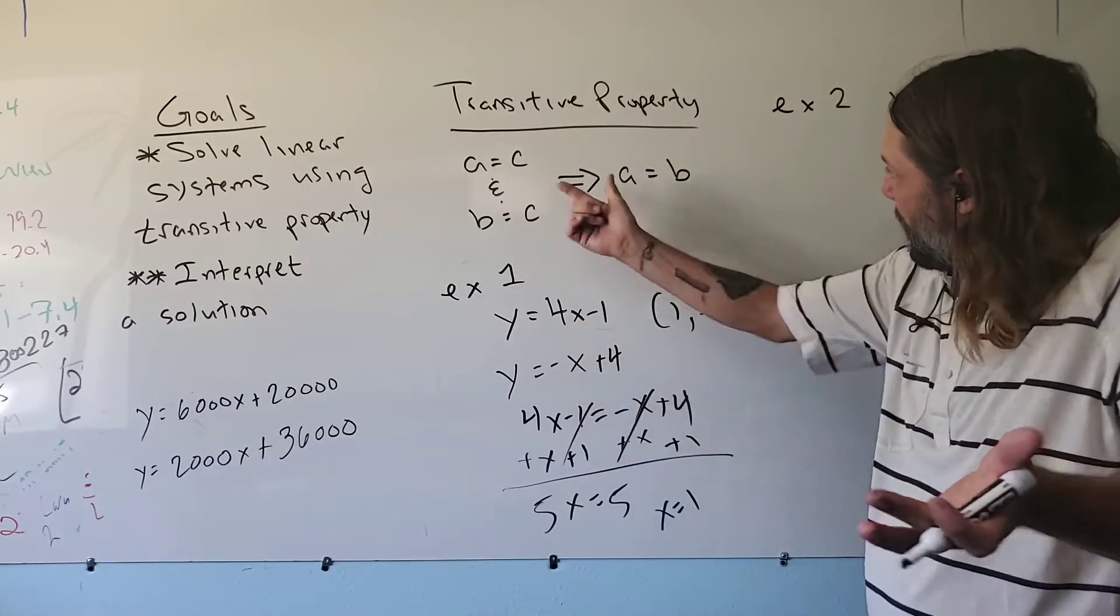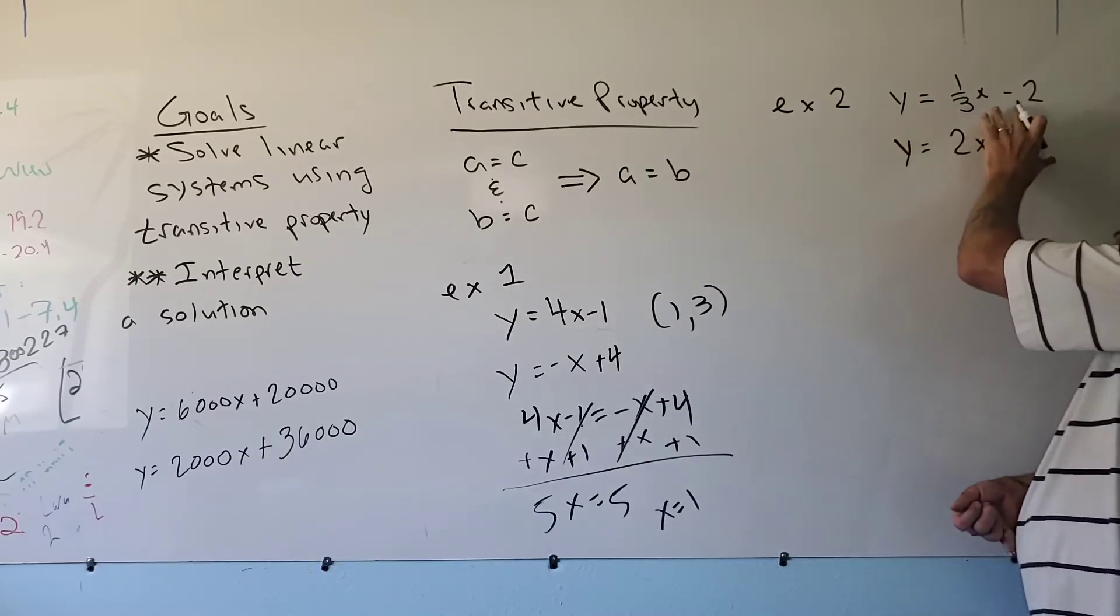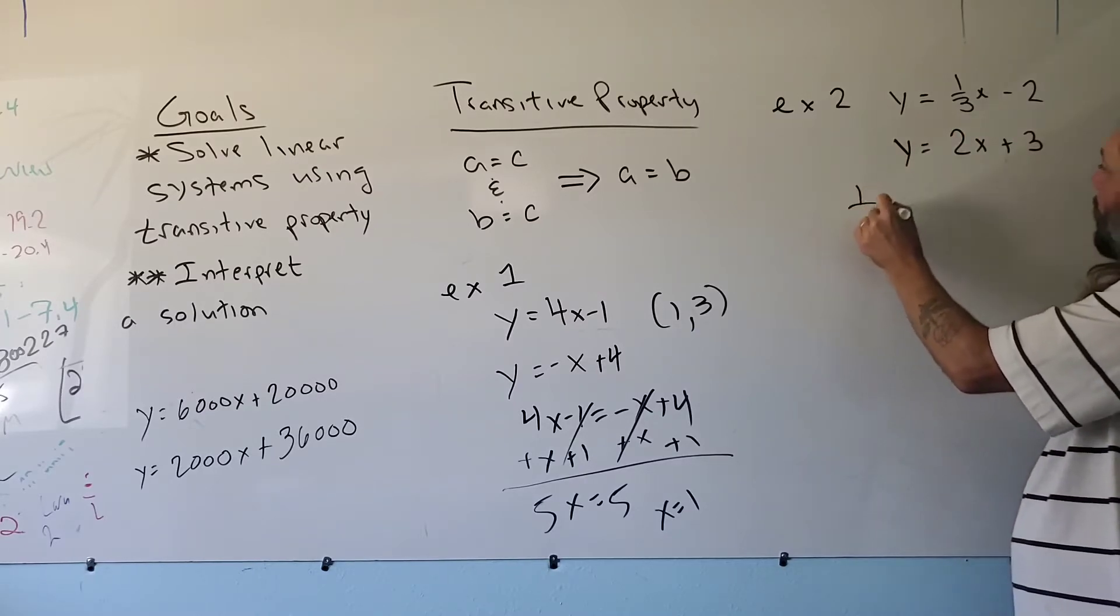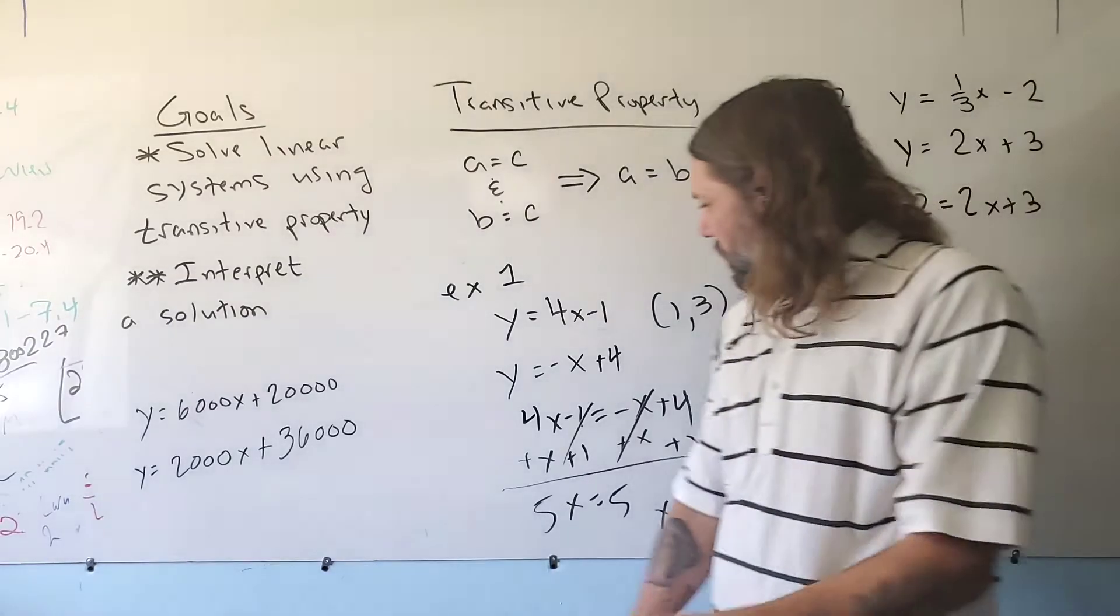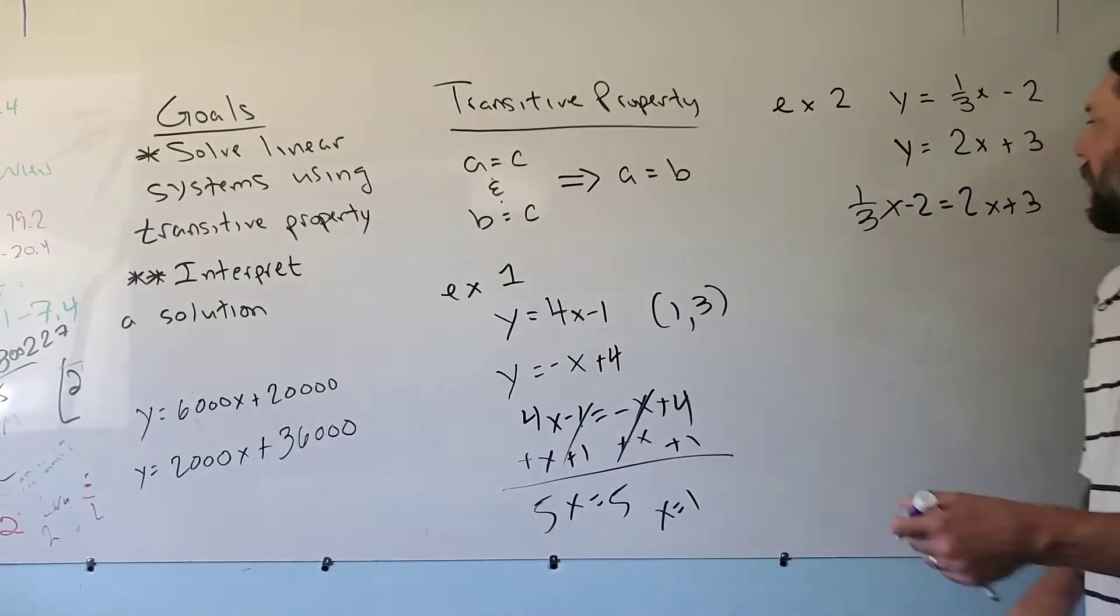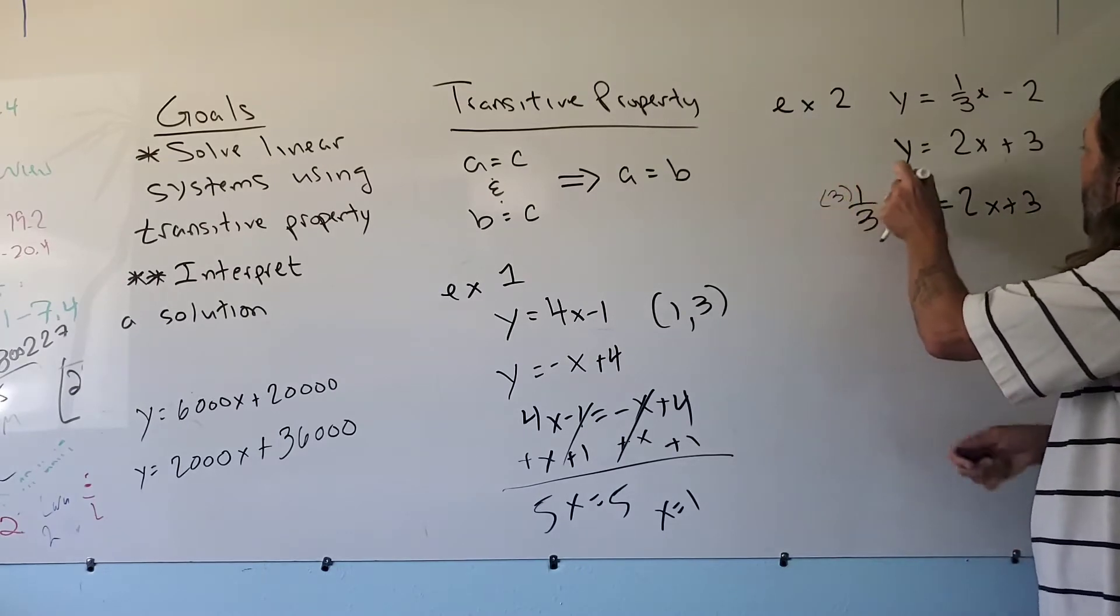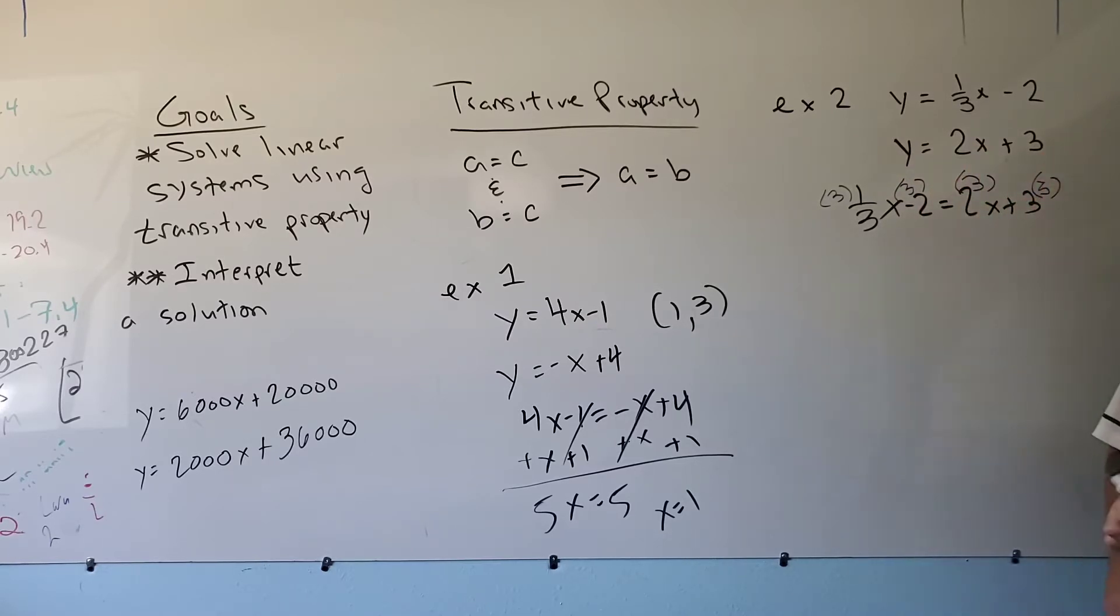The second example, we have a fraction in it. Two things are equal to the same thing, so these two things must be themselves equal. So 1 third x minus 2 equals 2x plus 3. This problem, we have a fraction, which you guys don't like. So what we're going to do is we're going to multiply everybody by the denominator in the fraction. So you get a 3, you get a 3, you get a 3, and you get a 3. 3 is canceled. Now I'm left with 1x minus 6, and that's equal to 6x plus 9.